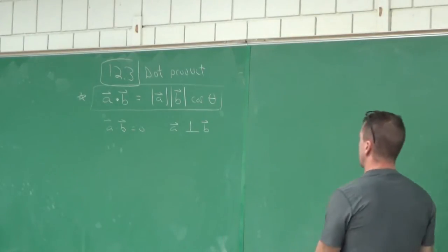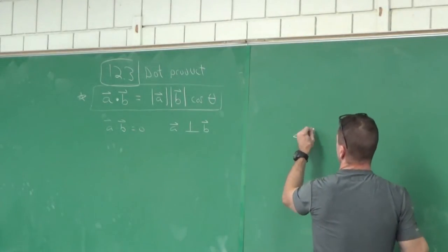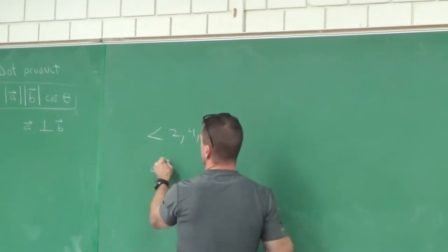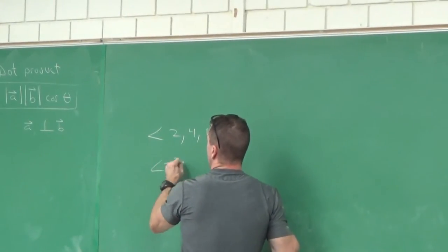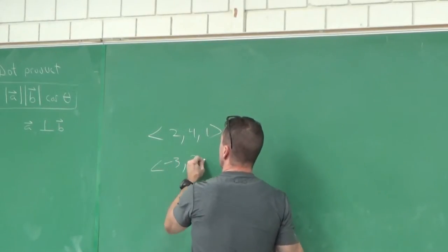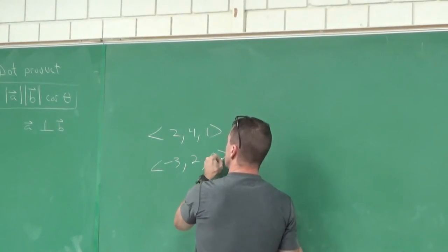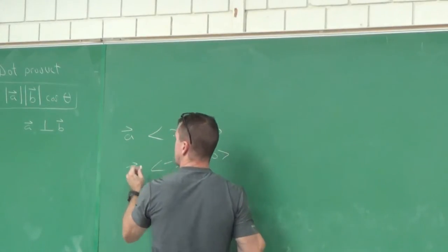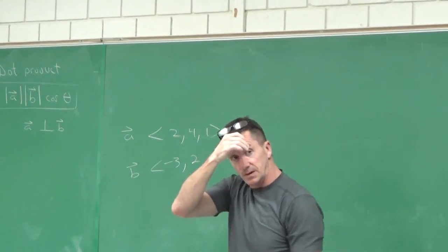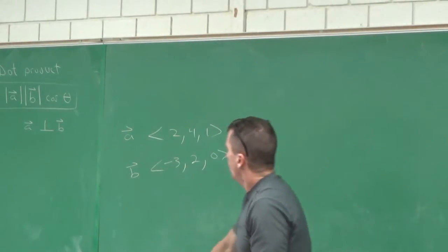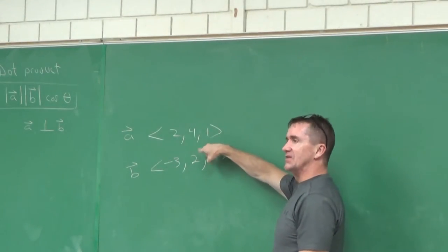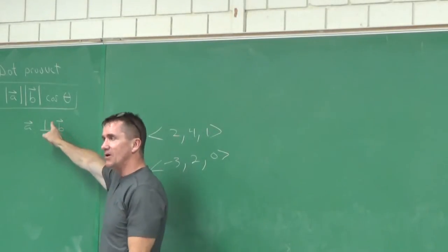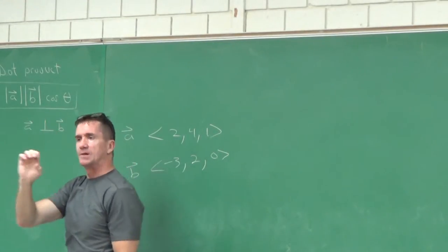What else is important about this formula? It allows us to find angles between two vectors — that's huge. This formula allows us to determine what is the angle between two vectors. Here's vector A: two, four, one. Here's another vector: negative three, two, zero. These are in three-dimensional space. What is the angle between these vectors? We'll use this formula. We should rearrange it and solve for theta — cosine theta equals A dot B over the magnitude of A times the magnitude of B.